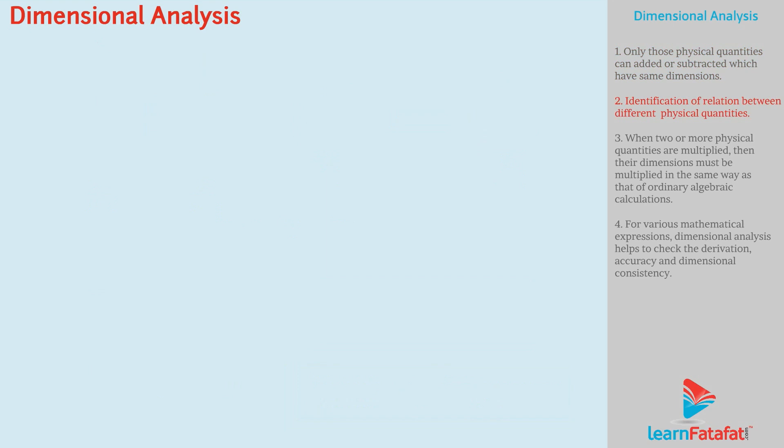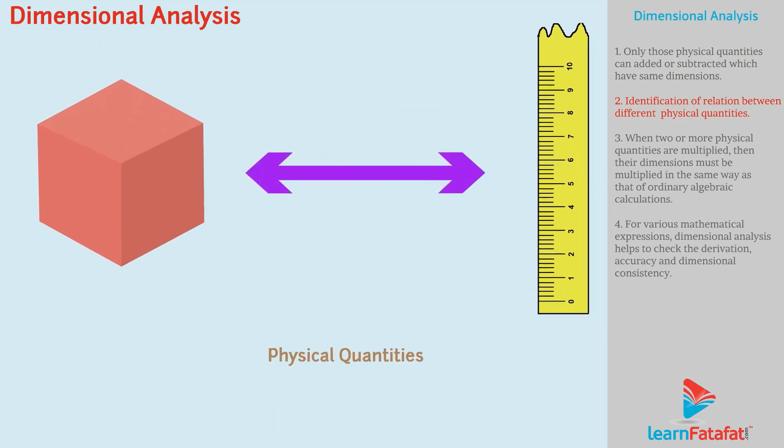Second, dimensional analysis helps in identification of relation between different physical quantities. For example, volume of a cube is a physical quantity. Its relation with another physical quantity length can be identified by the relation V equals to L to the power 3.